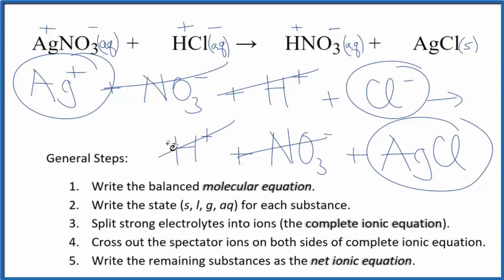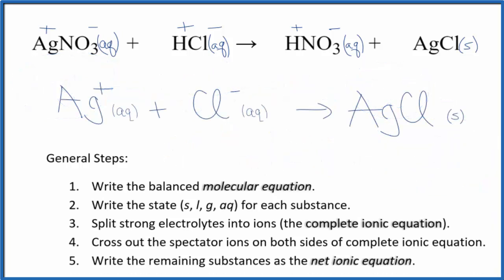And this is the net ionic equation for AgNO3 plus HCl. You'll notice that the charge balances out.